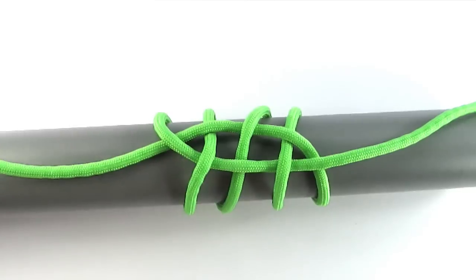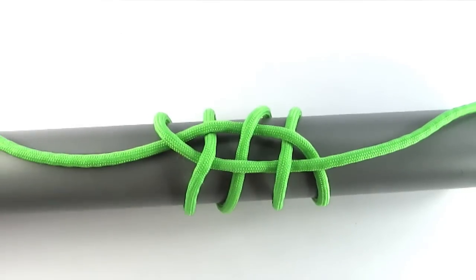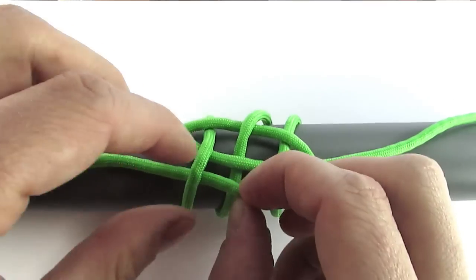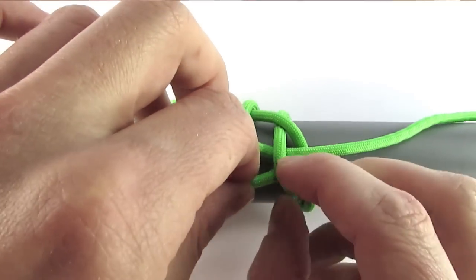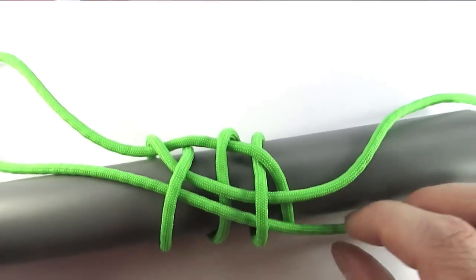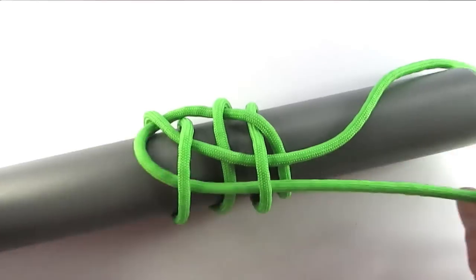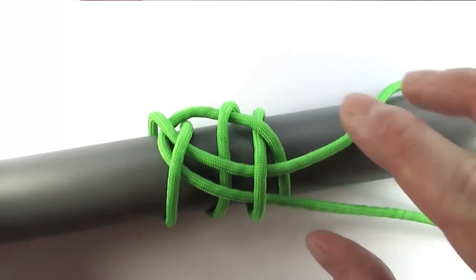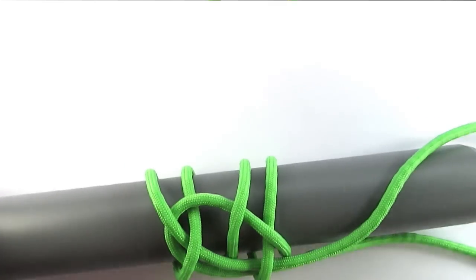First thing we're going to do is take our left hand and double up the cord at the bottom. We're then going to take our right hand, the top one, and double up the cord at the top.